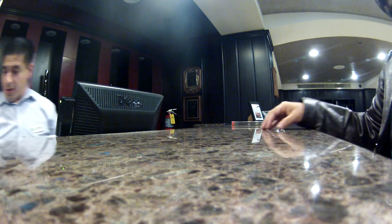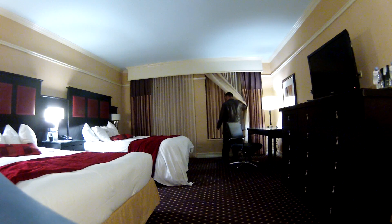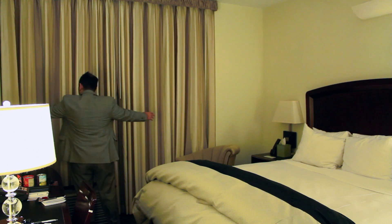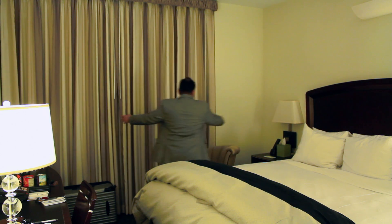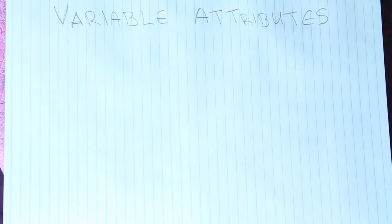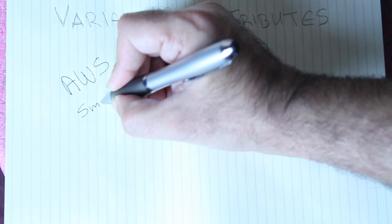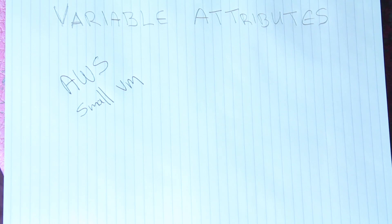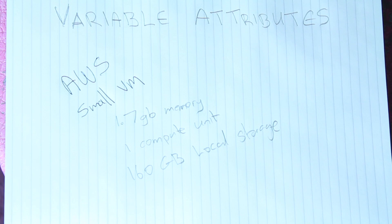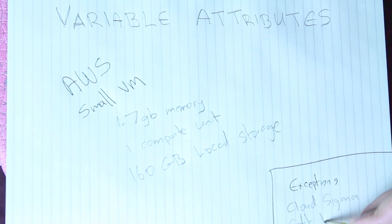Let's say you ask for a double room at a hotel — every room will be different from hotel to hotel: the size of the room, the facilities available, etc. This is the same model in IaaS. A virtual machine is given to you as the provider sees fit. For example, an Amazon Web Services small virtual machine contains 1.7 gigs of memory, one compute unit, and 160 gigs of local storage.